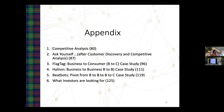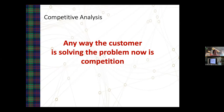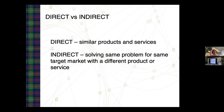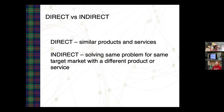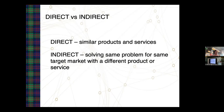Let's do a quick competitive analysis. However customers are solving the problem now is the competition — both direct and indirect. For example: who is Uber's competition? Direct competitors are other ride-share companies. But indirect competition includes Tesla, buses, scooters, rental cars, and Zipcars — they all solve the same underlying problem of getting from point A to point B, just differently. You have to think broadly about what the customer is trying to accomplish.